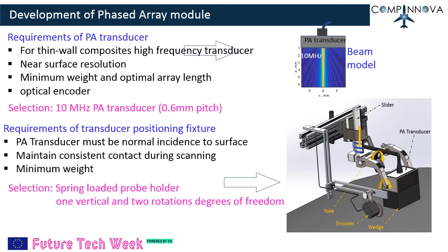For development of the phased array module: aircraft fuselage surface is predominantly thin-walled, 1 to 3 mm in thickness, and hence near-surface resolution is critical when selecting the PA transducer and wedge. Based on empirical rules of transducer array design, array beam model simulation, and near-surface resolution requirements, a 10 MHz PA transducer with 0.6 mm pitch is selected. Aircraft fuselage surface has a curvature and the wedge must conform to it.